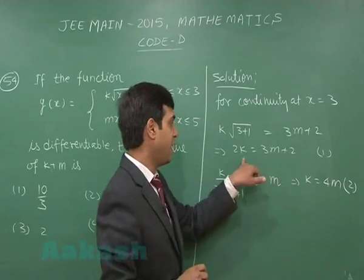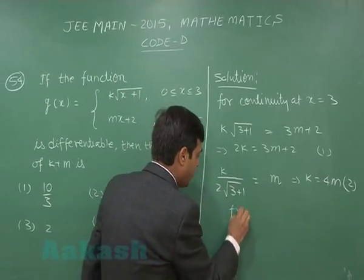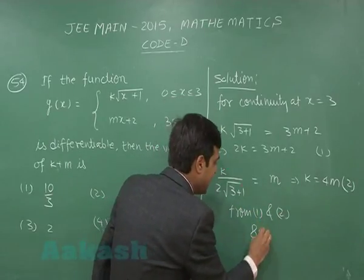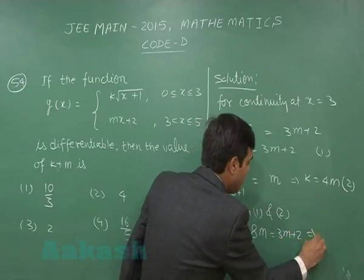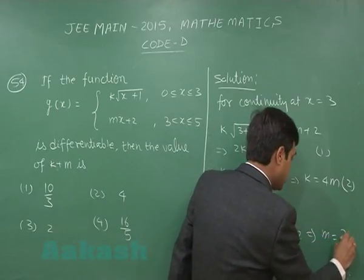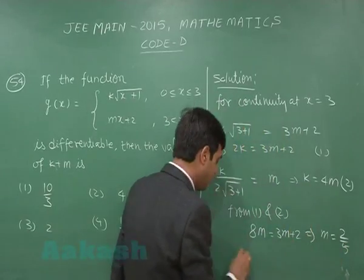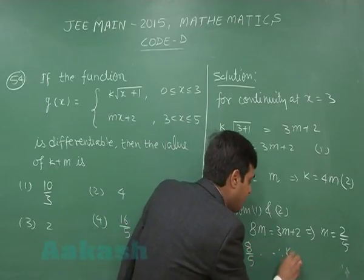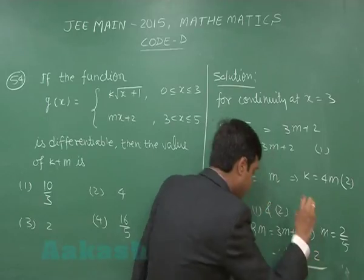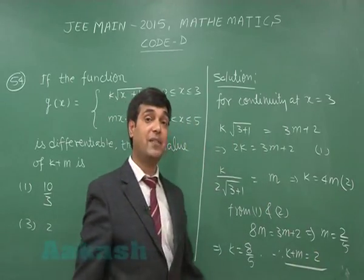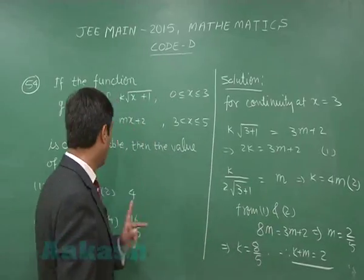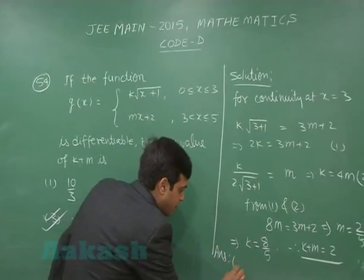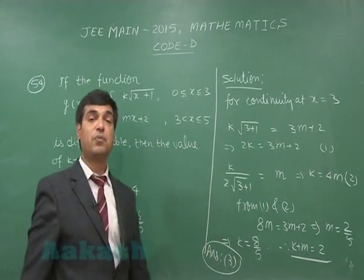That gives k = 4m — equation 2. Substituting into equation 1: 8m = 3m+2, so m = 2/5. Putting this back gives k = 8/5. Hence k+m = 8/5 + 2/5 = 10/5 = 2. The correct option is option number 3.